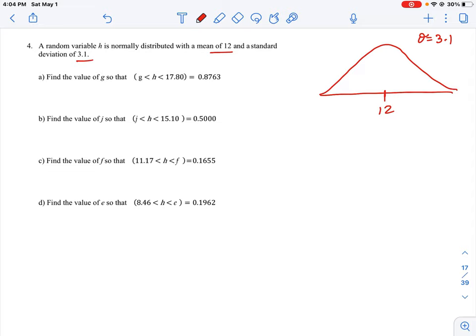So what we want to look for here is we need to find a variable, or a value for the variable g. So this is one of the endpoints. Where if we have a set of given values from this unknown number g all the way up to 17.8, that is going to capture 87% or 0.8763 of the curve.